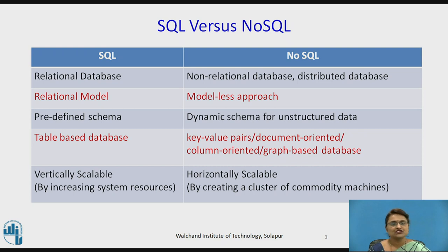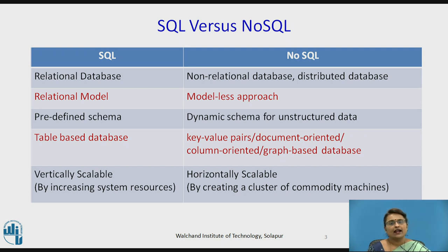In SQL, predefined schemas are already there — we know the table schema, the format, the attributes and all that. Whereas in NoSQL there is no such schema or attributes. SQL, being schema-based, is table-based where rows and columns are there and the data is stored in rows and columns.